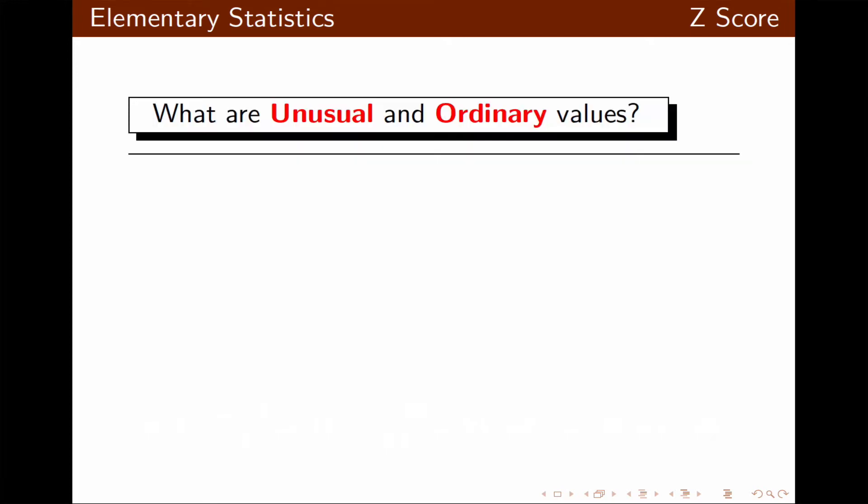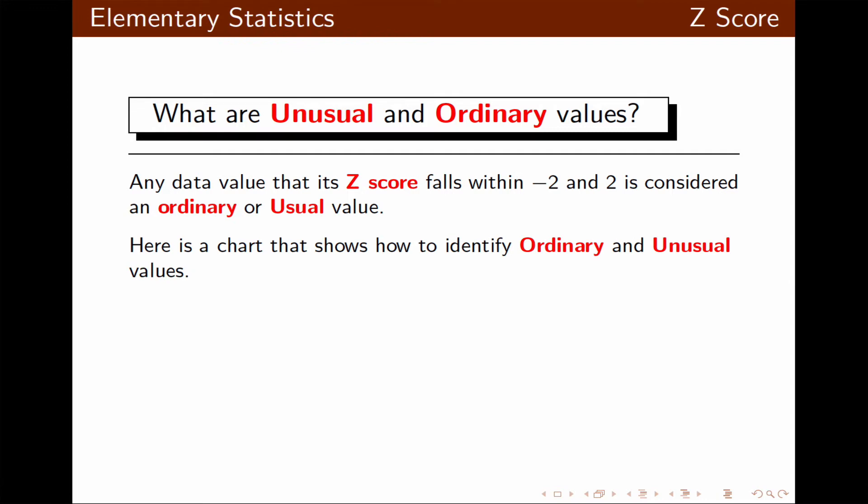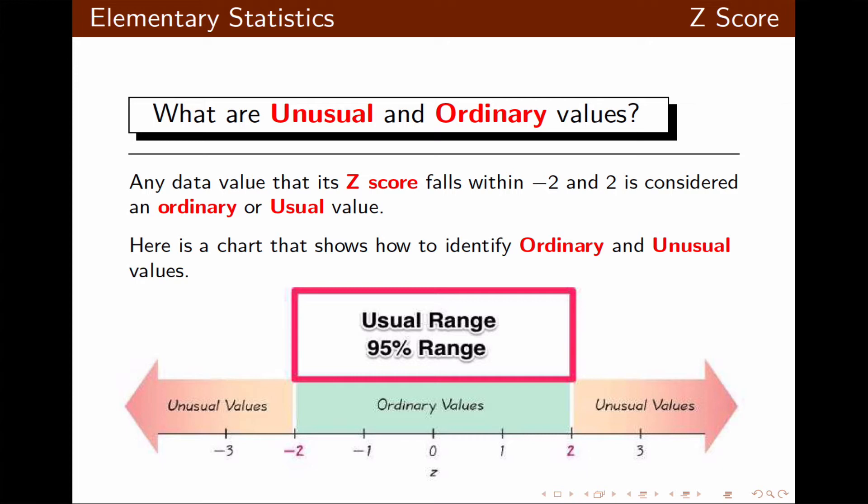Now, let's take a look at unusual and ordinary values. Any data element that has a z-score that falls within negative 2 and 2 is considered ordinary or usual value. Here's a chart that will help us identify ordinary and unusual values. If the z-score is between negative 2 and 2, it's considered usual or ordinary. If the z-score is greater than 2 or is less than negative 2, then it's called unusual value.